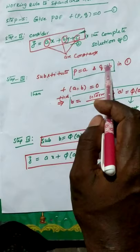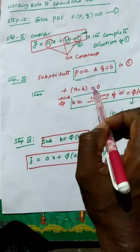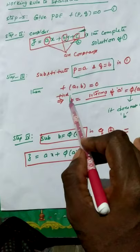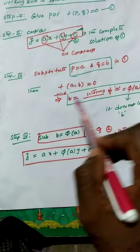Then we get f(a,b) = 0. From this we find the value of b in terms of a, that means b = φ(a), where φ(a) does not contain b. That means while finding the value of b in terms of a, the function φ(a) does not contain b.